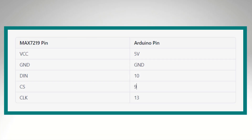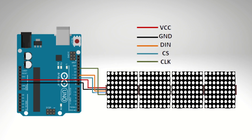Let's see the pin diagram for this circuit. Follow this table to connect the pin with Arduino and the 4-in-1 dot matrix display. See this diagram for reference.